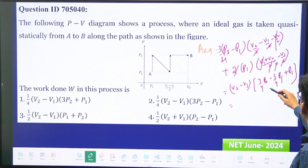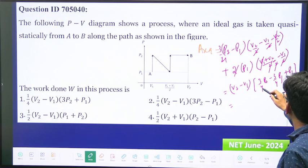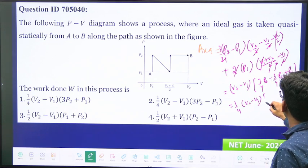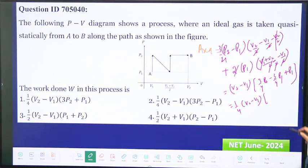3 by 4 p2, so just take 1 by 4 common, v2 minus v1, and this will become 3 p2. And 1 minus 1 by 4 will be 1 by 4, so plus p1. Okay, so 1 by 4, v2 minus v1, 3 p2 plus p1.